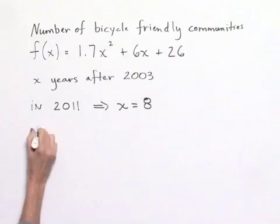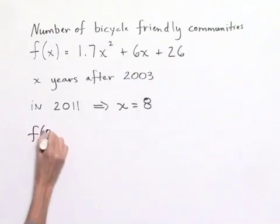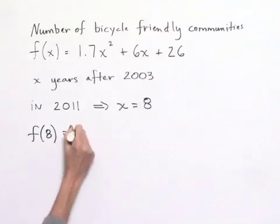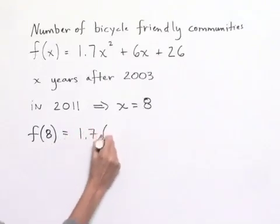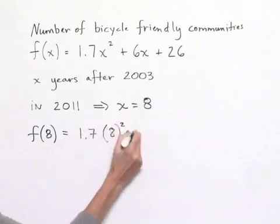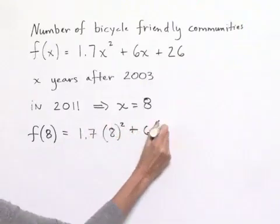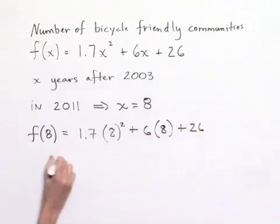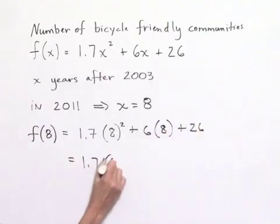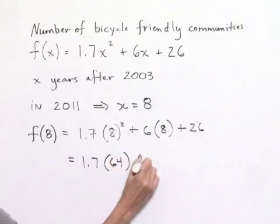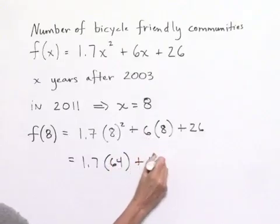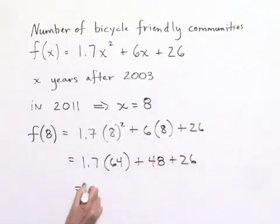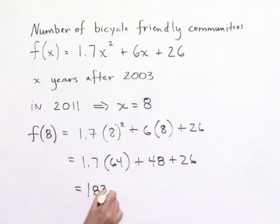We can now evaluate f(8) by substituting wherever we see x with the value 8. So we'll have 1.7 multiplied times 8 squared plus 6 multiplied times 8 plus 26. This will give us 1.7 times 64 plus 6 times 8 is 48 plus 26, and evaluating this gives us 182.8.